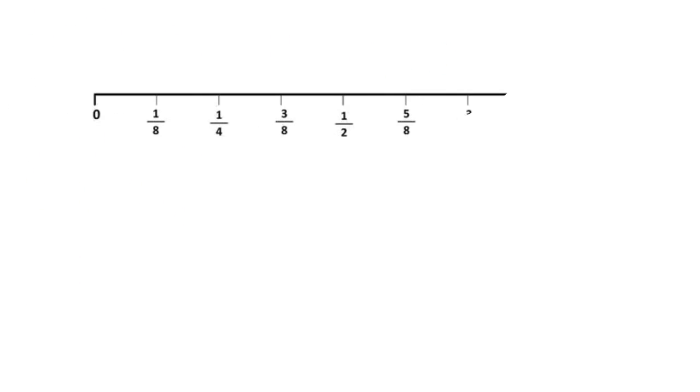This method works equally well on a number line with fractions reduced to lowest terms with different denominators. For example, suppose you want to find the distance between 1 fourth and 5 eighths on a number line divided into eighths.